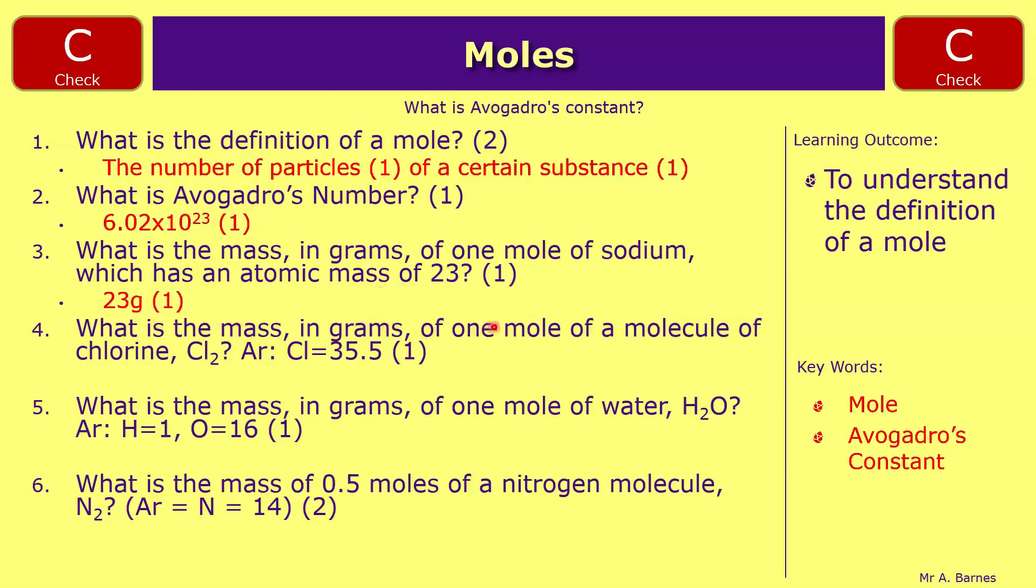What is the mass in grams of one mole of a molecule of chlorine Cl2? So you've got two chlorine atoms, so two times 35.5 is 71. And if you've got one mole, it's therefore going to be 71 grams.